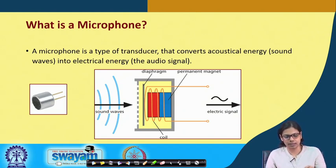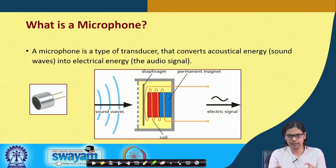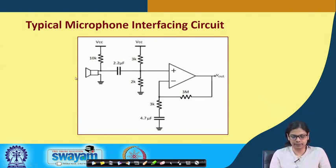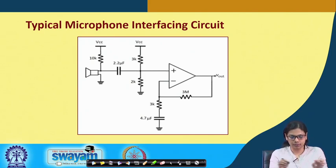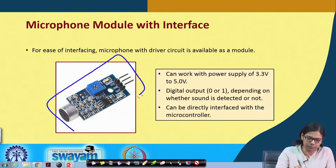We see here there are sound waves coming in, a diaphragm, and a permanent magnet. Some operation happens and there is a coil, and these sound waves actually generate some kind of electrical signal. This is the typical microphone interfacing circuit. You have a number of connections here with some resistances, ground, and other things.